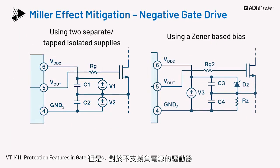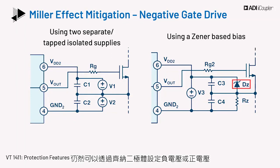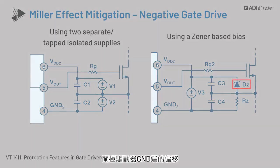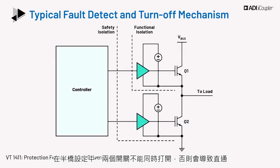For drivers which do not support a negative supply, bipolar supply operation can still be obtained using a Zener diode to set either the negative or positive voltage. Either method can be used to offset the emitter terminal of the IGBT with respect to the gate driver's ground terminal.